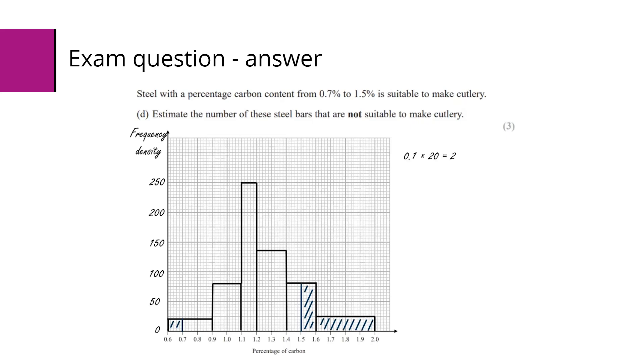Calculating how many that is, the area of the bar tells us this first section here has a width of 0.1 and a height of 20, so multiplying those together means that there are two in this section over here on the left shaded in. The section on the right is in two parts, so one of them is 0.1 times 80, which gives 8, and that last section we can just look that up in the table, it's 10. You can do the calculation if you wish, it's 0.4 times 25 would also give you 10. Adding those together gives a total of 20, and that's how many steel bars we would estimate would not be suitable.